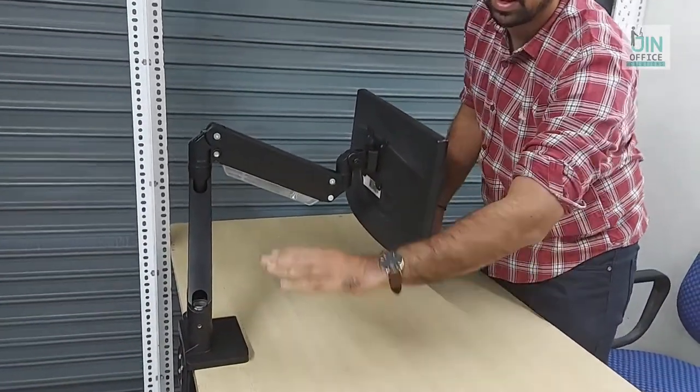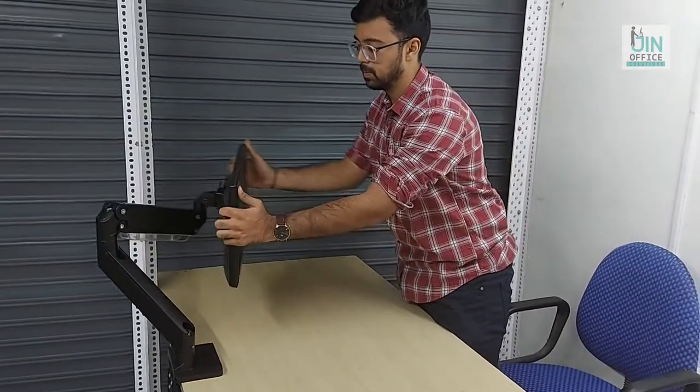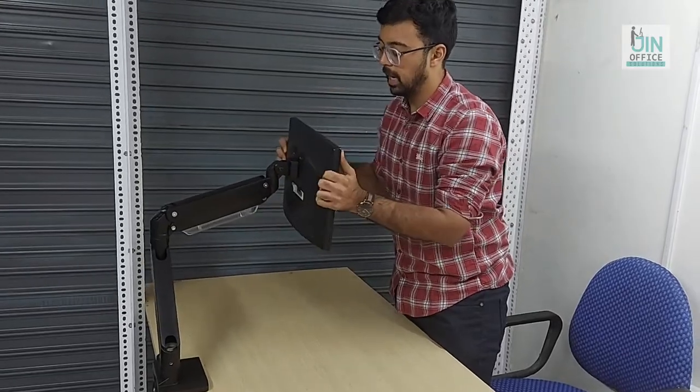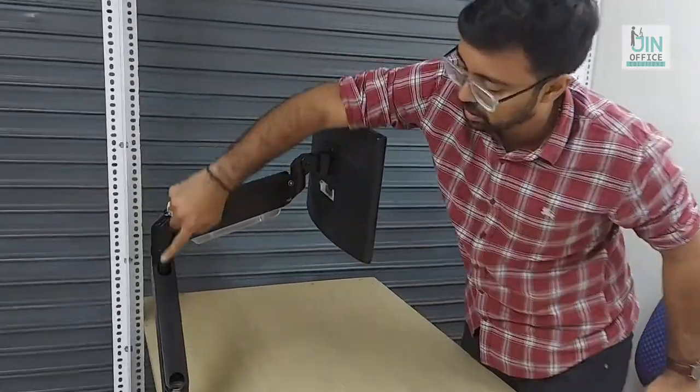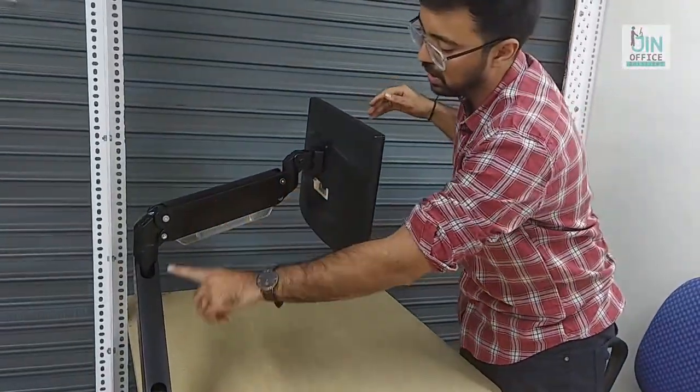The cable management is from inside the monitor arm onto the table, so your cables won't be visible anywhere on the table. It will go from inside the arm onto the tabletop.